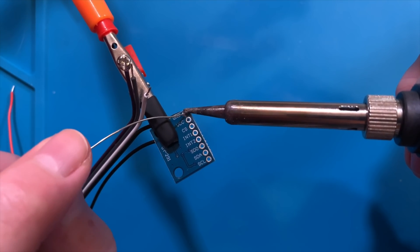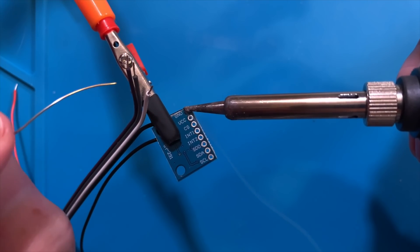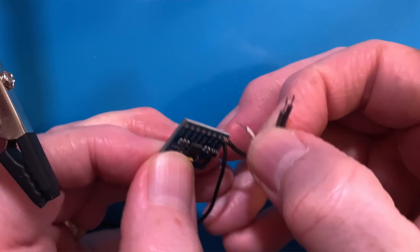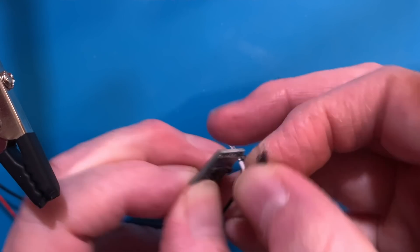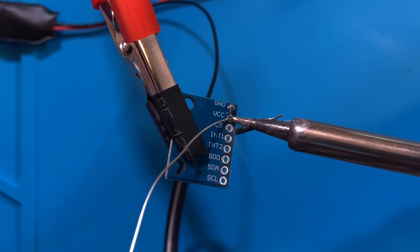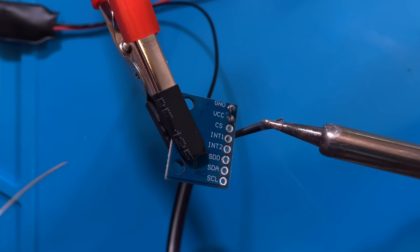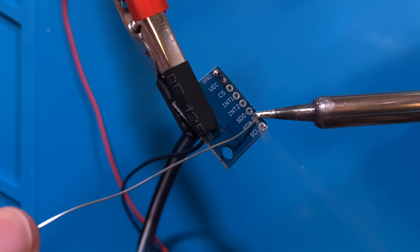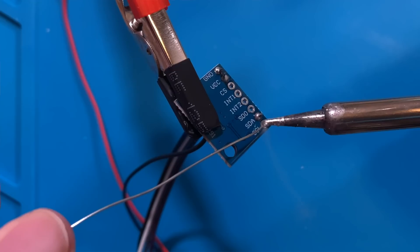So carefully push both wires into the hole labeled GND on the accelerometer. It's a tight fit, but I was able to make it work. Then, solder those two wires into that one hole. Pick another wire on the ribbon cable to be the VCC wire. I'm using the white one. Insert it into the hole labeled VCC and solder it into place.